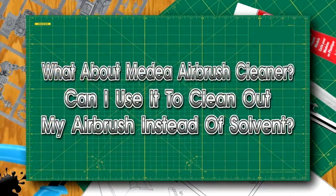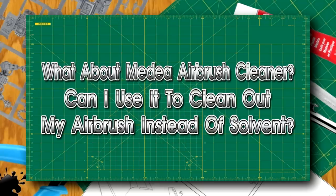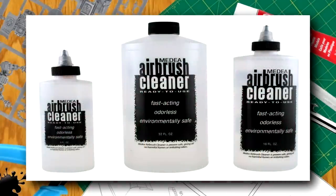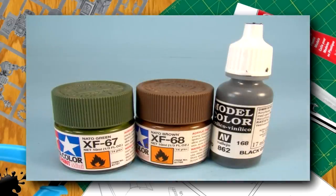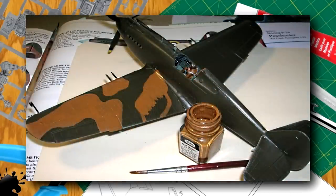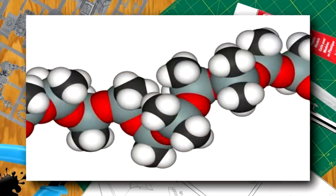What about Medea airbrush cleaner? Can I use it to clean out my airbrush instead of solvent? There's a saying, the right tool for the right job. Medea airbrush cleaner is great stuff and it works really well on wet paints and materials. Paint is a suspension of pigment in an adhesive substance. When the adhesive is wet, you can wash it off with soapy water. When it is dry, you need something to dissolve the molecular bonds the adhesive creates. This is where solvents such as acetone or lacquer thinner come into play.